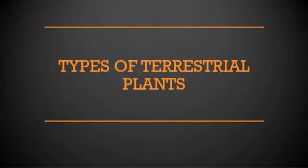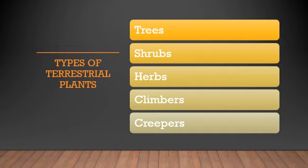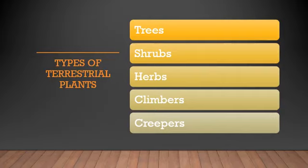We are going to see the different types of terrestrial plants — different plants that grow on land. The different types of terrestrial plants are: trees (T-R-E-E-S), shrubs (S-H-R-U-B-S), herbs (H-E-R-B-S), climbers (C-L-I-M-B-E-R-S), and creepers (C-R-E-E-P-E-R-S). These are the five different kinds of terrestrial plants that are present on the earth.